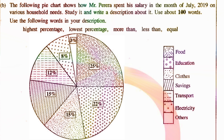The pie chart shows how Mr. Pereira spent his salary in the month of July.